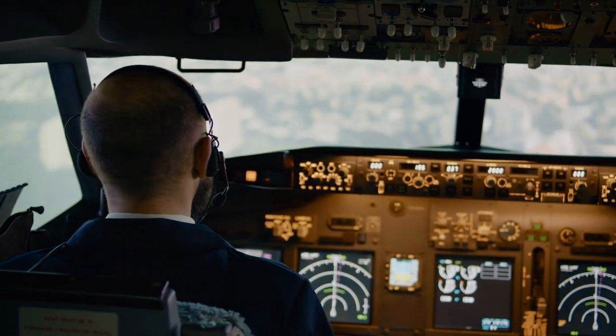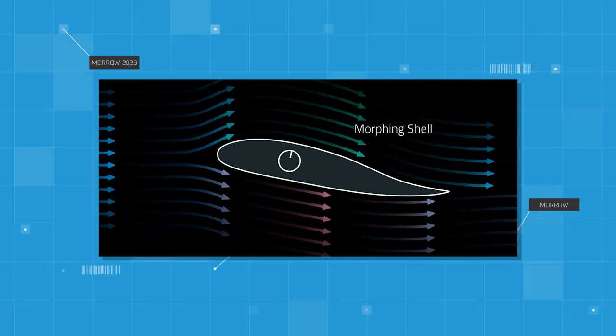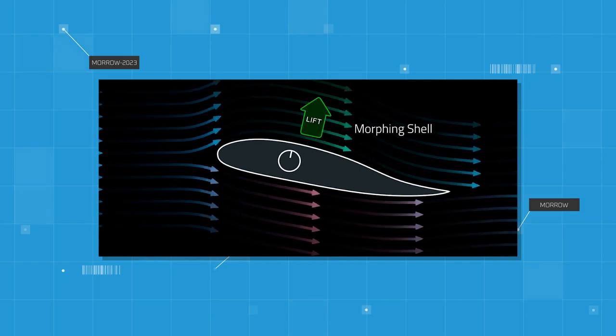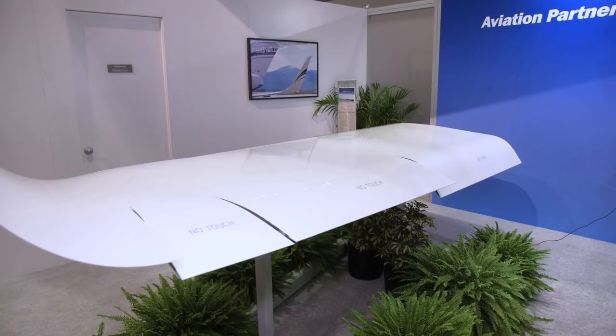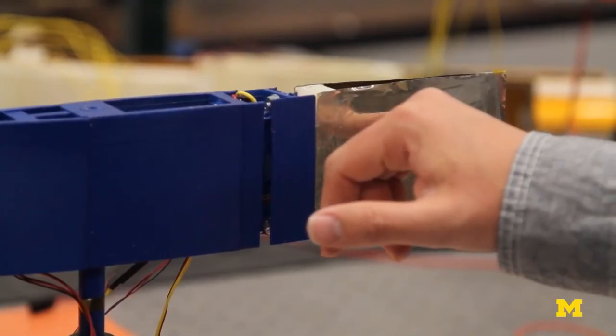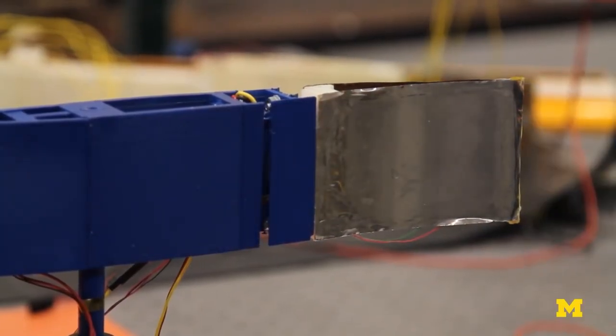For instance, during long-haul flights, wings could adjust to counteract the effects of changing air density at high altitudes, leading to minimized energy wastage. This adaptability aligns with the global push towards greener aviation, making metamorphic wings a key player in sustainable air travel.